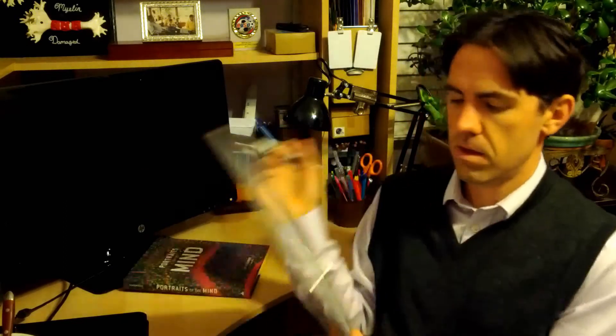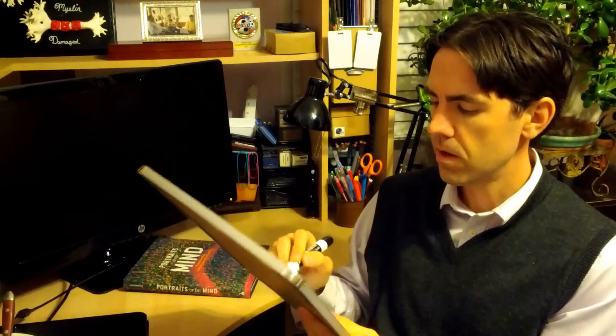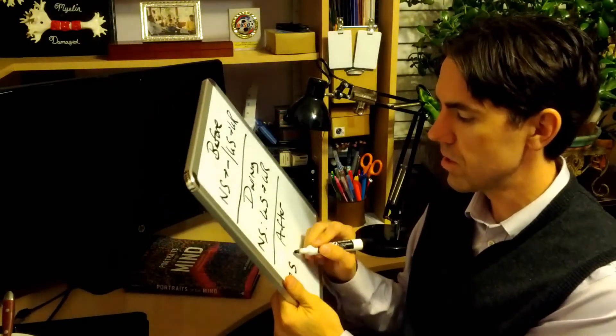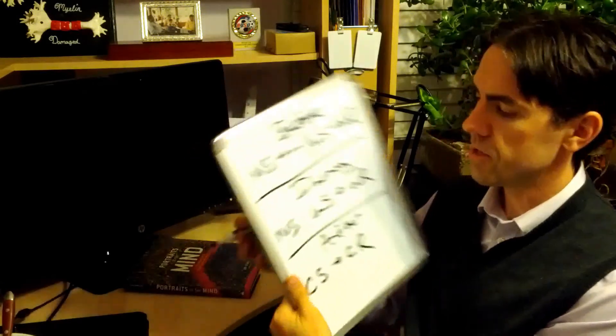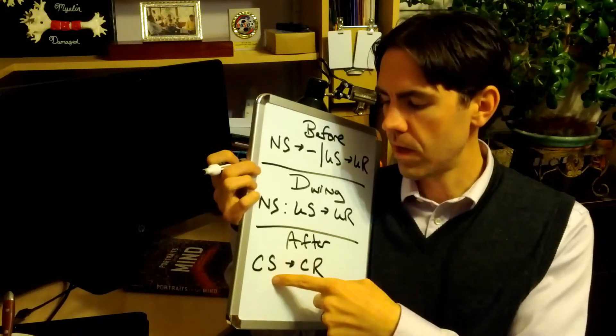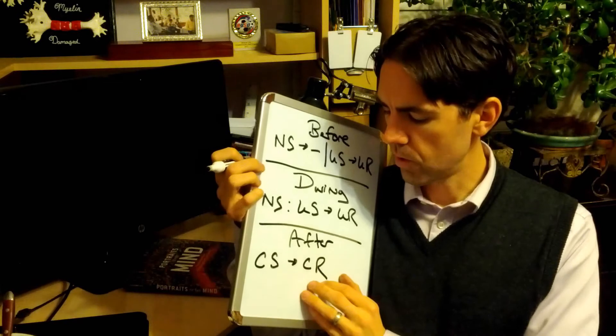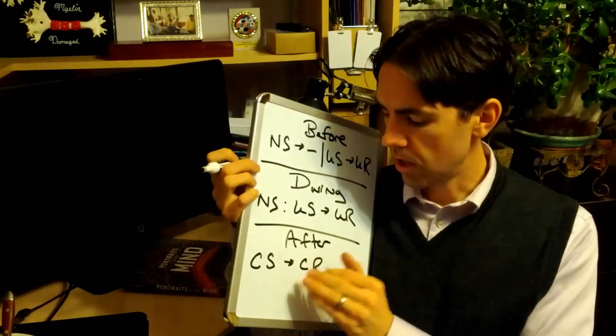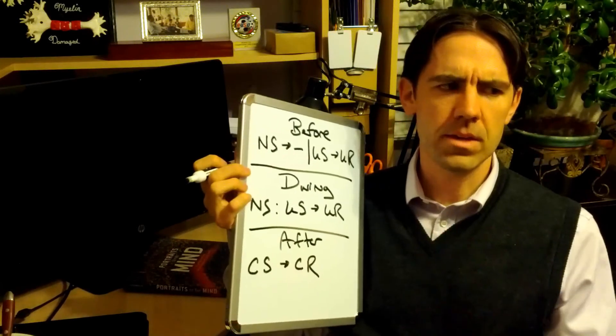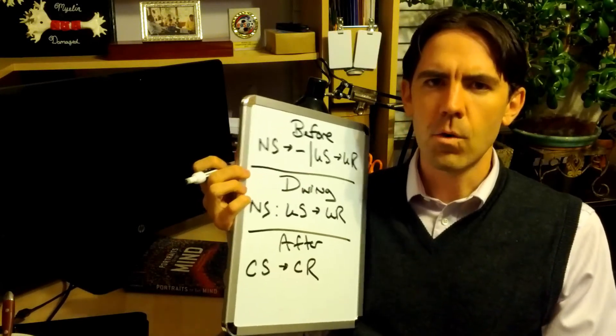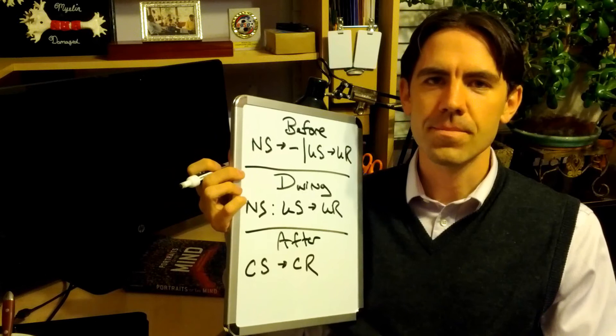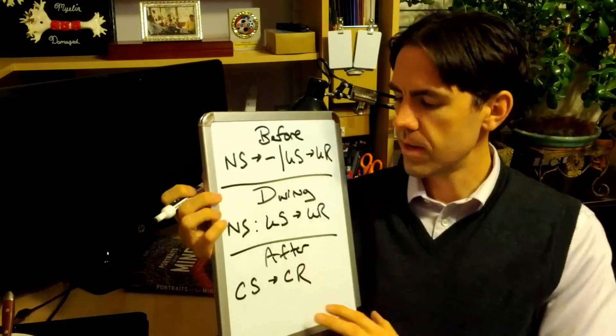And then the after is essentially that neutral stimulus, but here it's the conditioned stimulus will elicit the conditioned response. So the next day comes along, you see that same tuna. That tuna is going to automatically elicit some sort of representation of that original unconditioned response. And so you may feel nauseous, you may start to gag. Overall, it'll be a very gross feeling that you have associated with that tuna.